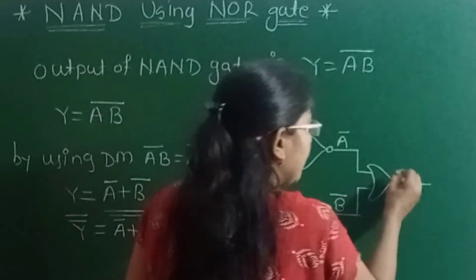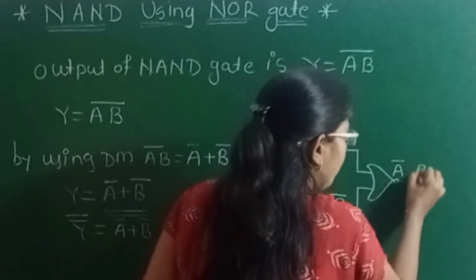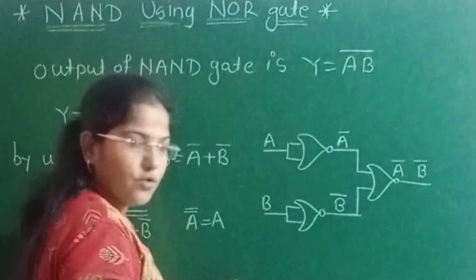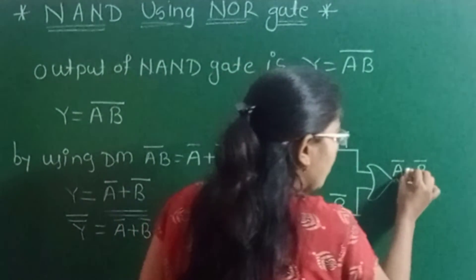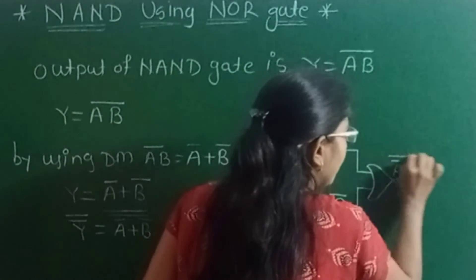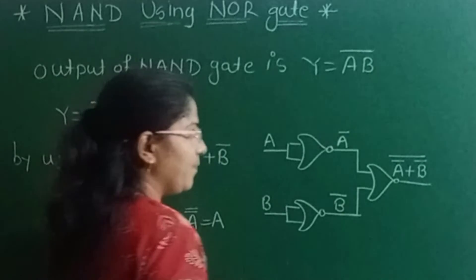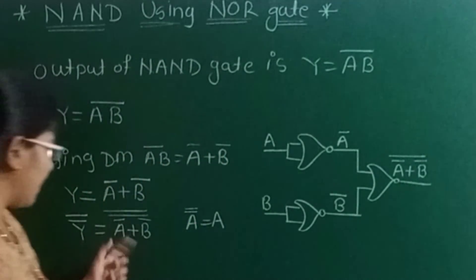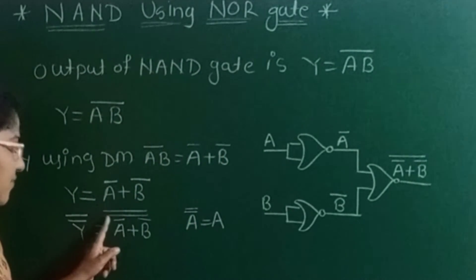Now provide these A bar and B bar as input to one more NOR gate. Its first input is A bar, second input is B bar. The NOR gate takes addition of their input and the whole complement. Now we got A bar plus B bar and its first complement.